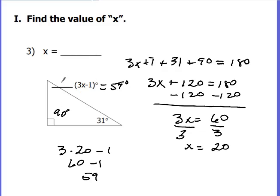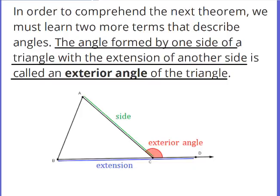What we've talked about so far is the fifth and sixth grade triangle angle theorem, with some seventh and eighth grade algebra applied to it. Now let's move up to the eighth grade concept. We need to understand the idea of an exterior angle. In order to comprehend the next theorem, we must learn two more terms. The angle formed by one side of the triangle with the extension of another side is called an exterior angle.